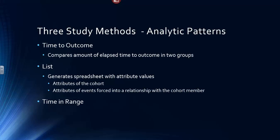And the last analytic pattern is time in range. It summarizes the amount of time spent in defined categories of a continuous variable. So, for example, what percentage of time did the patients have their INR in the range of 2 to 3? What percentage of time were they 0 to 2? What percentage of time were they in a range greater than 3?